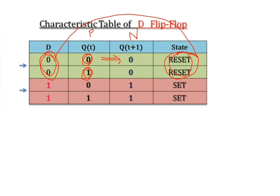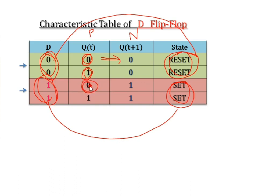If D=1, it represents the set condition. Whatever the present output may be, it is set to one. If present output is 0, next state is 1; if present output is 1, next state is also 1 — because the characteristic in this condition is set. So the data input and its characteristic determine the next output. This is the characteristic table of the D flip-flop.